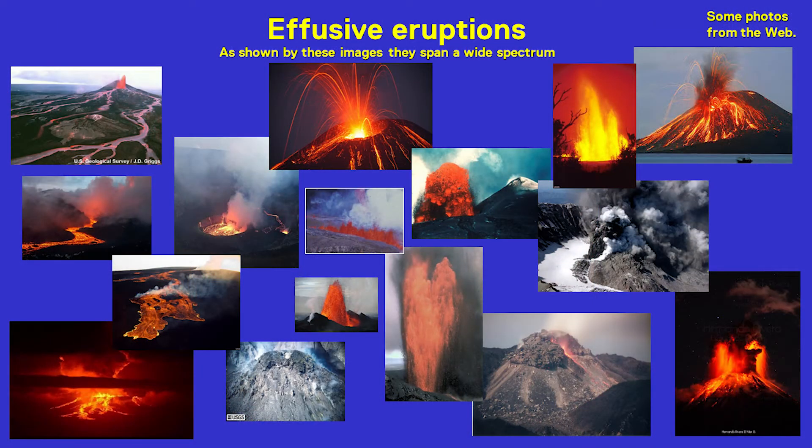As shown by these images, effusive eruptions span a range of styles and types. A range of circumstances can lead to effusive eruptions. Firstly, the magma arising from depth towards the surface can contain such low volatile content that there are not enough volatiles to produce fragmentation of the magma as it decompresses on its way to the surface, and therefore we have lava effusion.